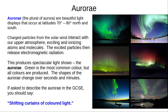The aurorae are beautiful light displays, most easily seen at latitudes 70 to 80 degrees north and south. Charged particles from the solar wind interact with the upper atmosphere, exciting and ionizing molecules, which then release electromagnetic radiation. The light produced is the aurorae, most often green light, though all colors can be produced. They appear as shifting curtains of colored light, which change over seconds and minutes.